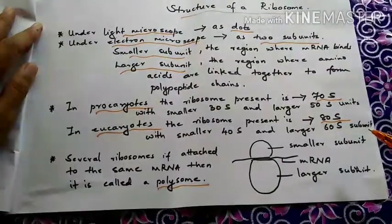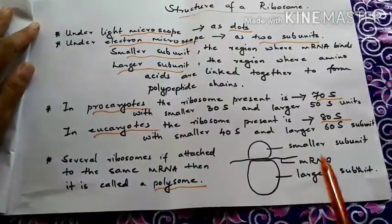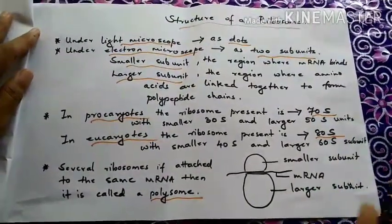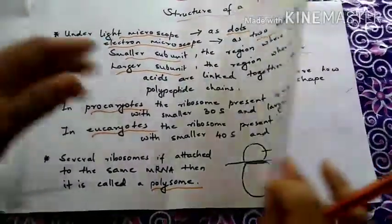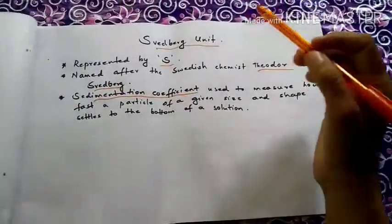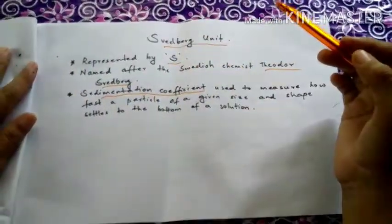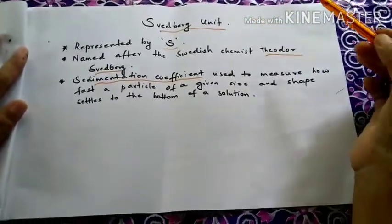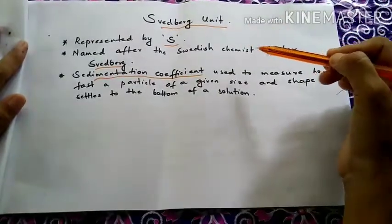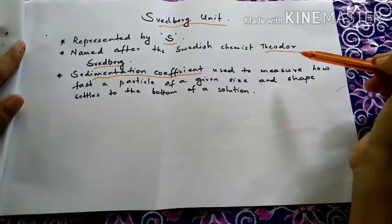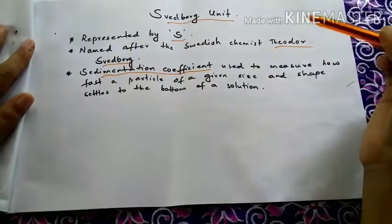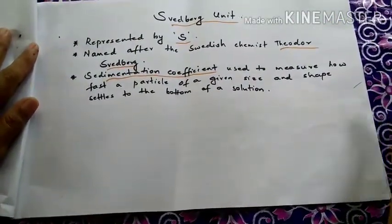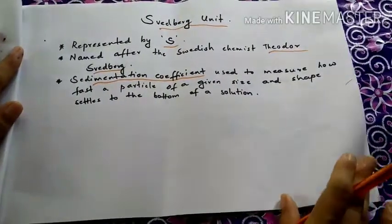If several ribosomes are attached to the same messenger RNA, this structure would be called a polysome. S is a common letter used to represent the Svedberg unit, named after the Swedish chemist Theodor Svedberg. S is a sedimentation coefficient used to measure how fast a particle of a given size and shape settles to the bottom of a solution.